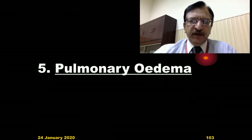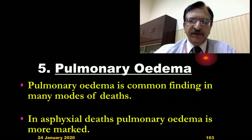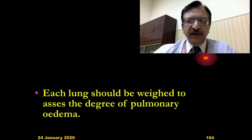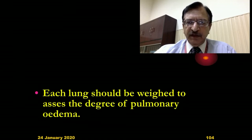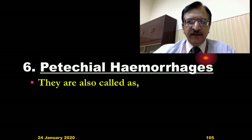Pulmonary edema is a common finding in many modes of death, but in asphyxial death it is more marked. An important instruction is that every lung — each lung — should be weighed to assess the degree of pulmonary edema, and it should be compared with the normal weight of the lung. Now the petechial hemorrhages — these are also important non-specific signs of asphyxia, also called Tardieu spots.